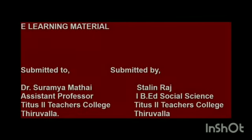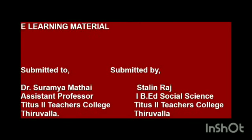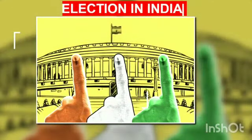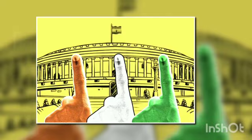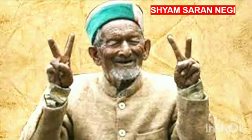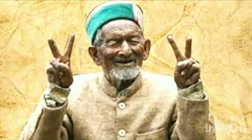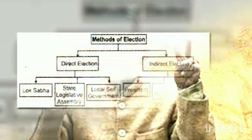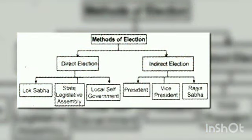In this chapter, you will understand and analyze the system of elections in India. India is the largest democracy in the world. Evidently, the largest democratic electoral exercise in the world is also conducted here. Shyam Saran Negi, the vote he cast on 25th October 1951, is the first vote in independent India. Majority of nations in the world have adopted the democratic form of government.